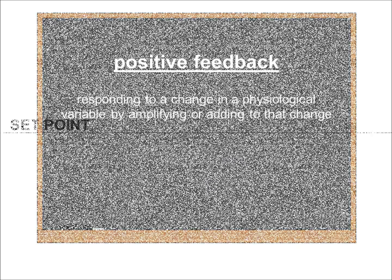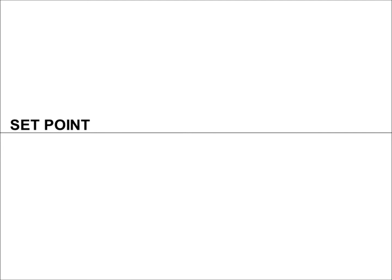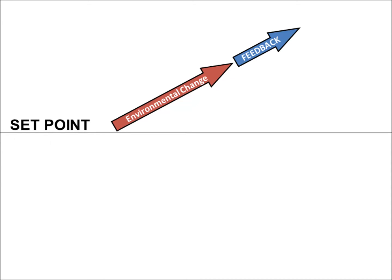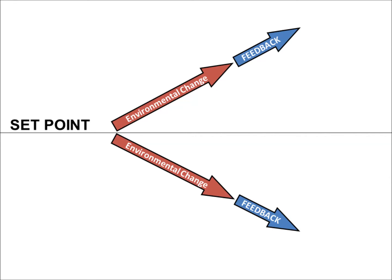Here's a generic physiological variable. The line represents the set point or average value, and the environment changes in such a way that the variable increases. Positive feedback in response to this increase would be additional increase. By contrast, if the initial change had been to decrease the variable's value, positive feedback would have further decreased it. Notice, positive feedback doesn't make the value go up — it just takes whatever the change is and does more of it.